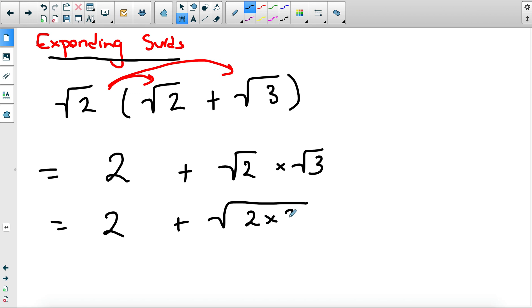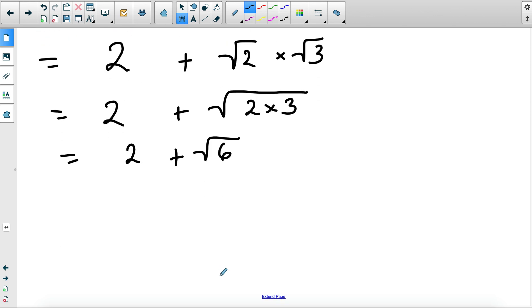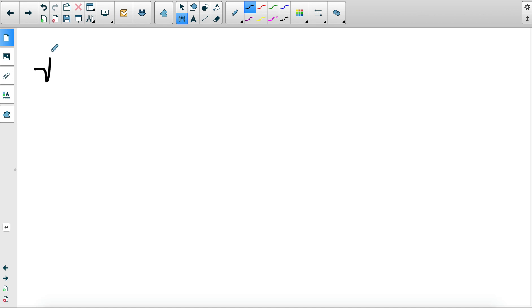That is square root of six. So that's as simple as it goes. I can't simplify any further and I can't collect the like terms, so this is the simplification. You always expand and simplify.